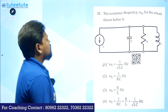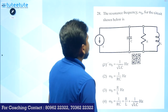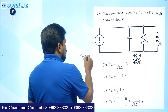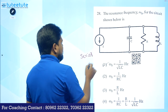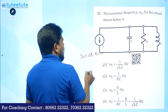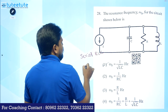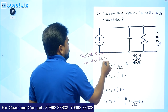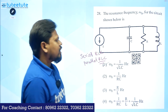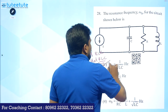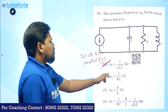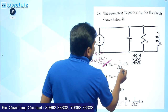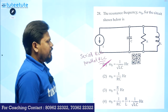Next question: the resonance frequency ω₀ for the circuit shown below is? For any series RLC circuit or parallel RLC circuit, whenever an RLC circuit is present, the resonating frequency is directly ω₀ = 1/√(LC). That is straightforward.